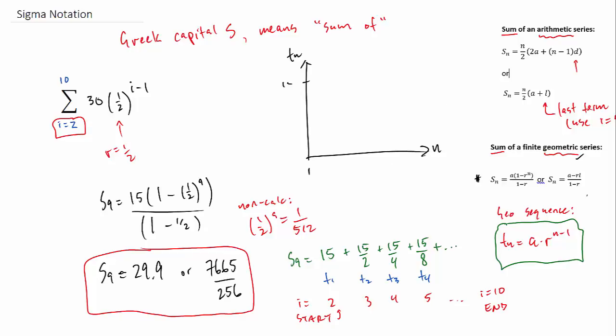Now one last thing to look at is kind of looking ahead to calculus and what this means for something called an integral. So if we were to plot the term numbers versus n, it looks a little bit like a half-life graph.